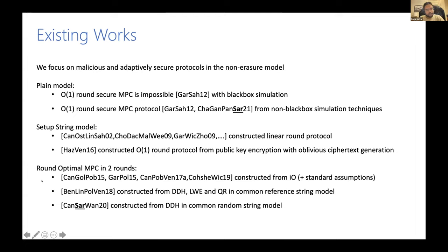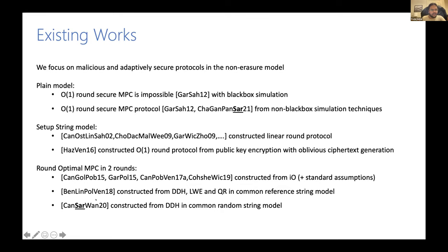Let us focus on the two-round setting. We know that two-round MPC is round-optimal in the CRS model. In this model, there were a few works from IO starting from the CGP and GP 2015 papers. Then the work by Ben Muda et al. constructed the first two-round adaptively secure MPC from standard assumptions like DDH, LWE, and QR without IO in the common reference string model. In another work, we constructed adaptively secure MPC from DDH in the common random string model.